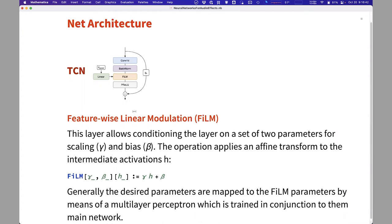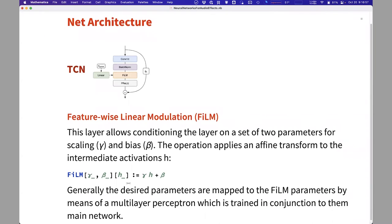For each of these TCN blocks, this FiLM layer is embedded. And what it does is applies an affine transformation to the activations of that block, given two parameters, gamma and beta. And these parameters are derived by a multi-layer perceptron that takes the input of the knobs,